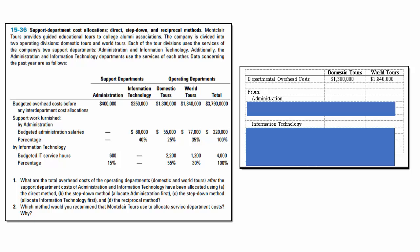Let's explore this support department cost allocation problem. We've got Montclair Tours, which provides guided education tours to college alumni associations. The company is divided into two operating divisions: domestic tours and world tours. They also have support departments — administration and information technology. The first requirement asks us to determine the total overhead cost of the operating departments after the support department costs have been allocated using three methods.